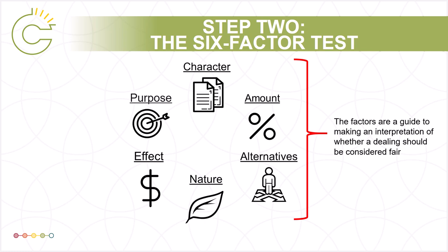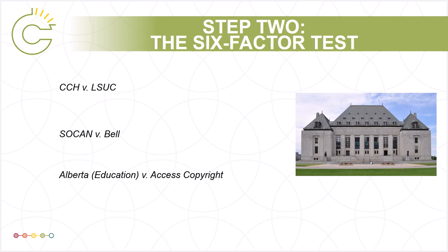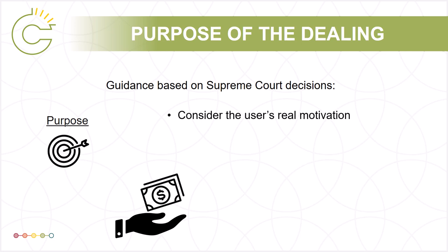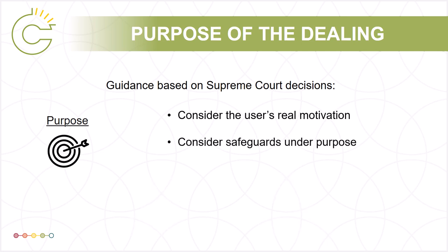The Supreme Court also noted that in future cases, other factors beyond these six may be considered. The Supreme Court in three fair dealing cases — CCH, SOCAN, and Alberta Education — has provided guidelines on how to understand and apply the factors. With regard to the purpose of the dealing, the court in CCH stressed that the user's real motive should be considered, noting that research done for a commercial purpose may not be as fair as research done for a charitable purpose. In the SOCAN case, the court noted that safeguards such as only allowing users to stream 30-second music previews rather than download them should be considered under purpose.